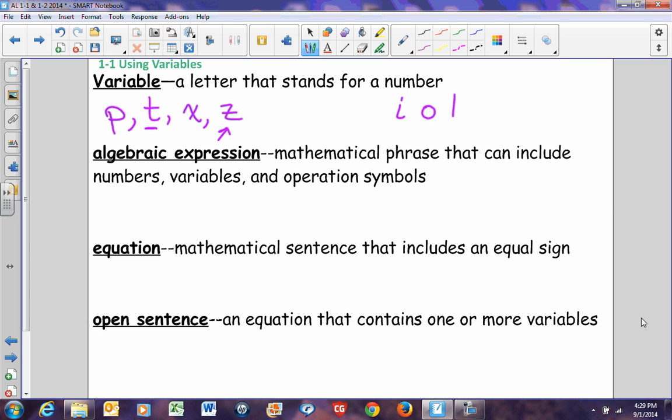Examples of algebraic expressions: x plus 6, 2y squared minus 9, 3z to the 4th plus 5x minus q. All of those are algebraic expressions. They contain at least one variable and mathematical operators between them.